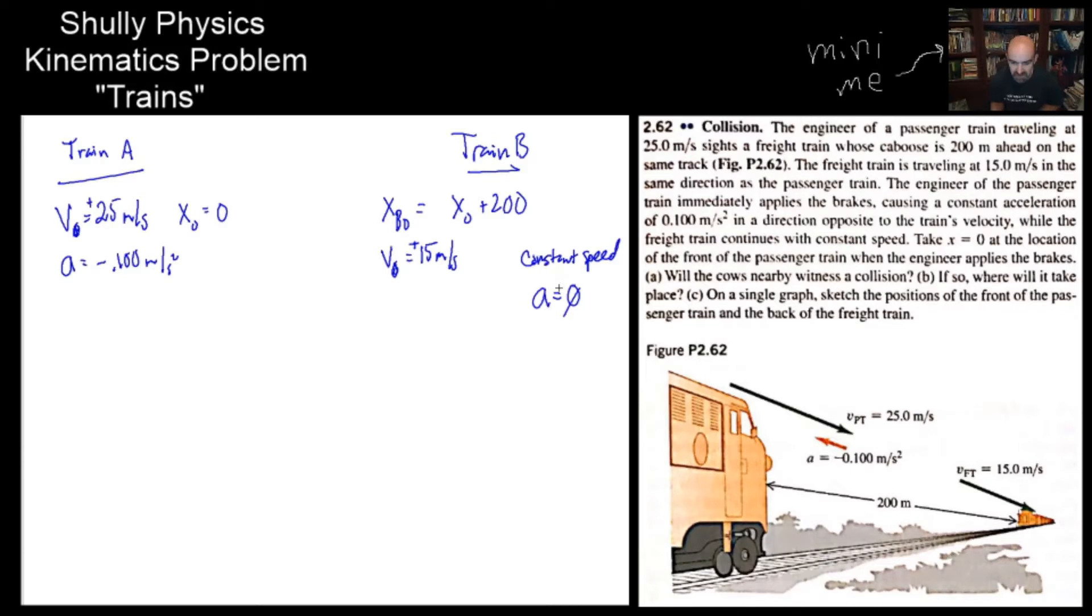Writing out that information is important. The freight train continues at a constant speed. So let me make note of that. This is a constant speed. And what does that imply? That implies that the acceleration rate is 0. Take X is 0 at the location where the front of passenger train applies the brakes.